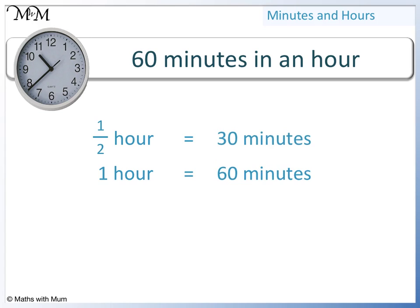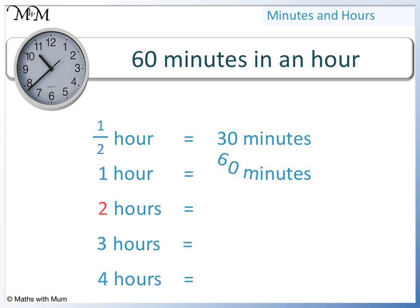Knowing that there are 60 minutes in 1 hour, we can also work out how many minutes there are in 2 hours. For 2 hours, we have 2 lots of 60 minutes, so we multiply 60 by 2. 6 twos are 12, so 60 times 2 equals 120 minutes.